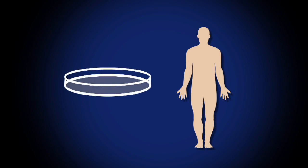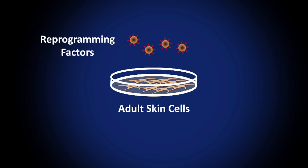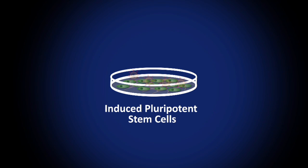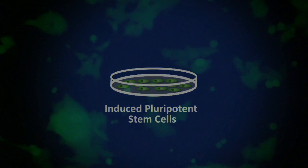Reprogramming, or de-differentiation, is the technology where you take any type of cell in the body - for example, from a hair follicle or small skin sample - and you turn that cell into the equivalent of an embryonic stem cell. The great thing about this technology is that you can derive stem cells specifically from the patient who needs them.